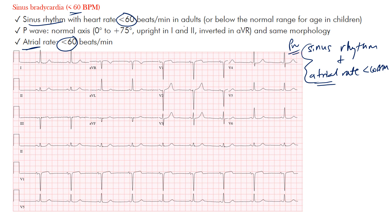An atrial rate less than 60 beats per minute — this is in adults, of course. Children tend to have a higher lower limit of normal. In adults, the P-wave axis in sinus rhythm is between zero and positive 75 degrees. The P-wave, just like the QRS complex, T-wave, and ST segment, all have an axis, and normal is zero to positive 75 degrees.